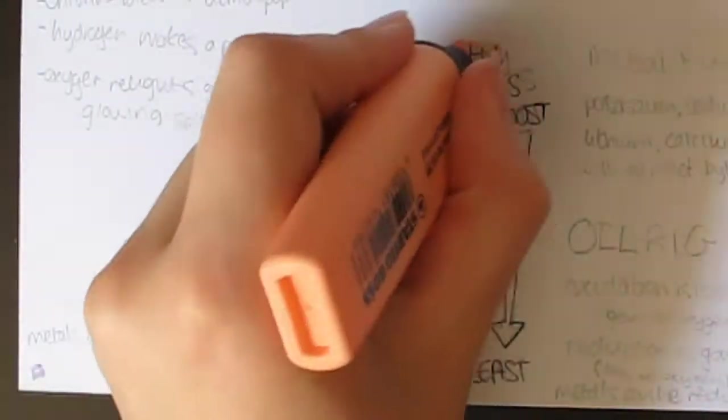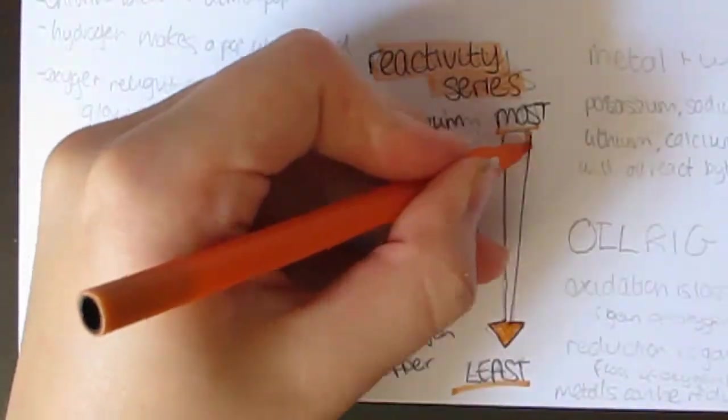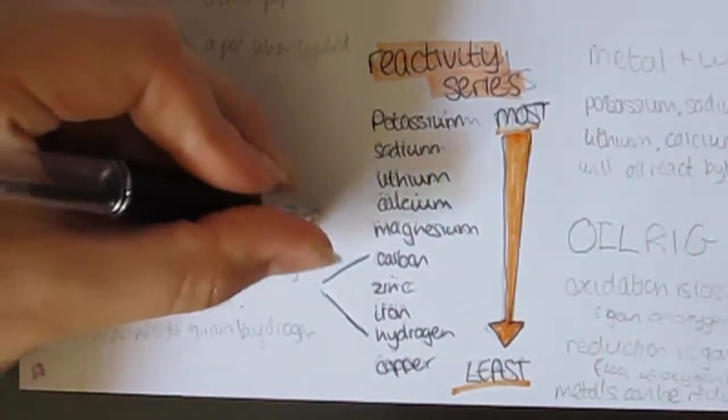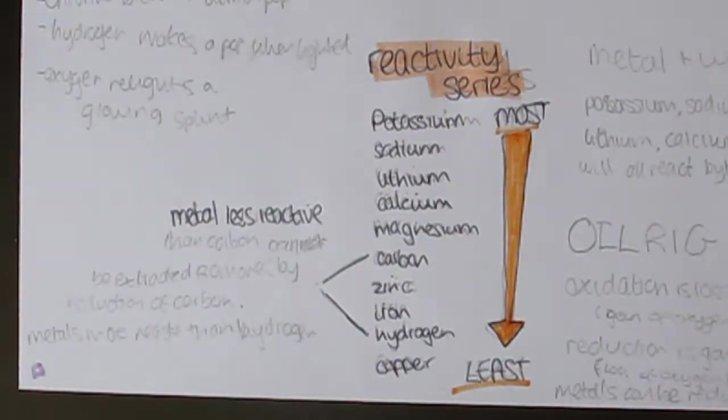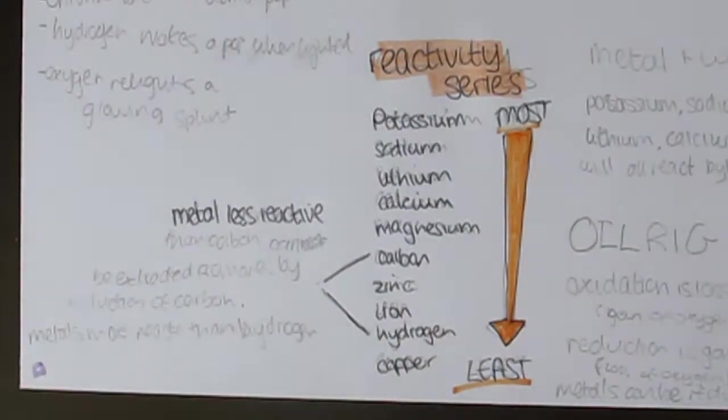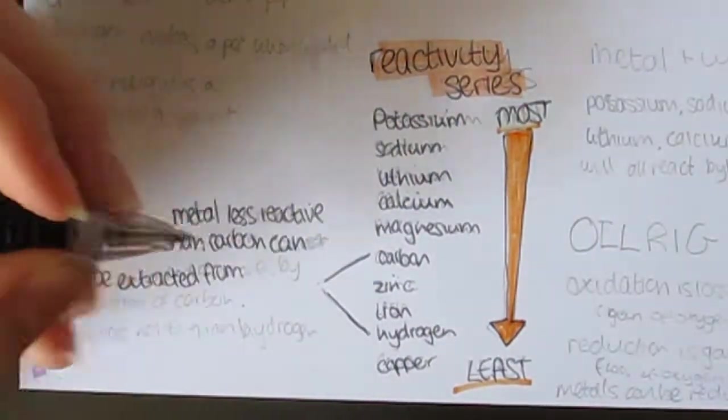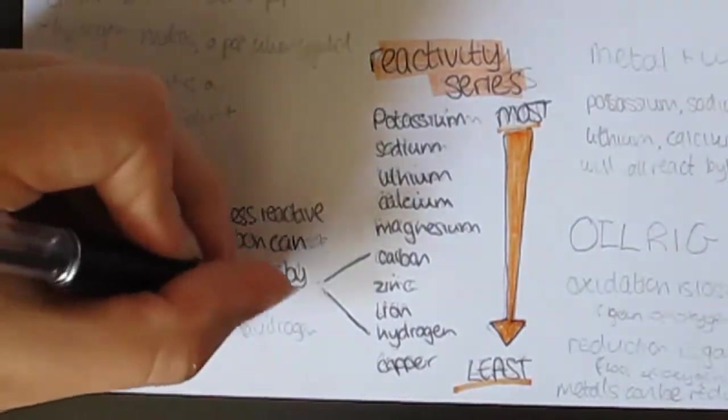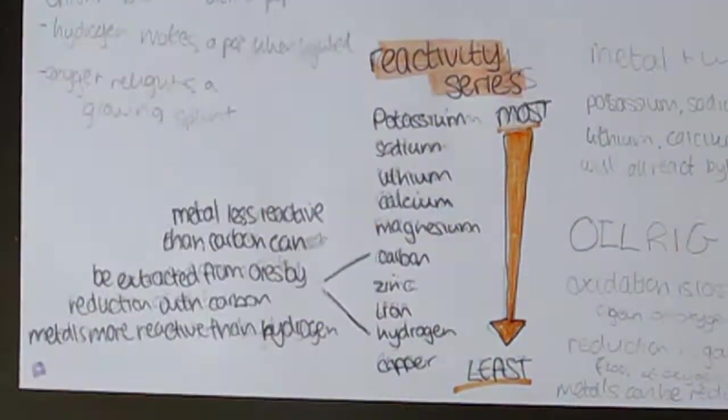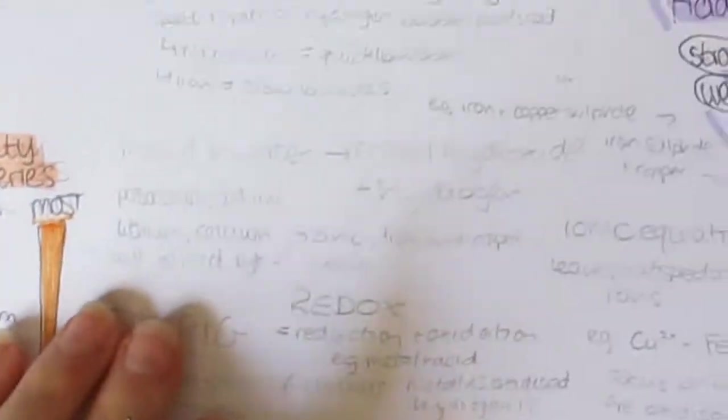Carbon and hydrogen are in there to determine their usefulness in reactions. For example, metals less reactive than carbon can be extracted from ores by reduction with carbon, but metals higher cannot. And metals more reactive than hydrogen will react with acids. Metals less reactive will not.